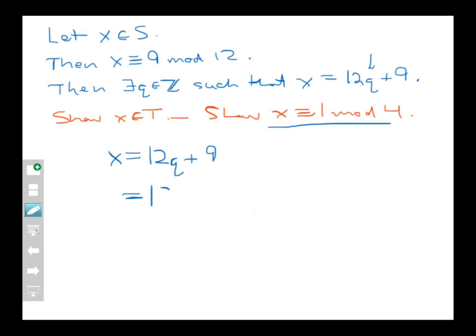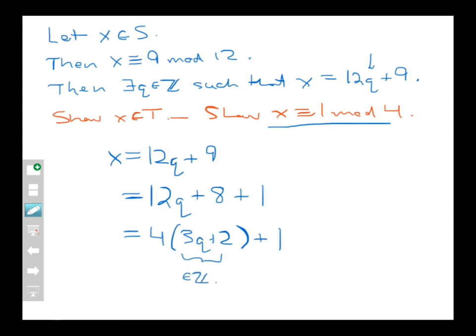I know X = 12Q + 9. I want to write X as 4 times an integer plus 1. Writing 12Q + 9 = 12Q + 8 + 1, I can factor a 4 out of the first block: X = 4(3Q + 2) + 1. By closure, 3Q + 2 is an integer. So X is not only congruent to 9 mod 12, it's also congruent to 1 mod 4 because I've written X as 4 times an integer plus 1. Therefore, X ≡ 1 (mod 4).